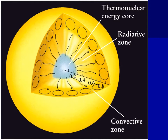We have a pretty good idea about the basic structure of the sun. From the center outwards about a quarter of the way is the core of the sun. That's where thermonuclear reactions are going on — that's where the energy is being produced.